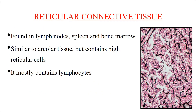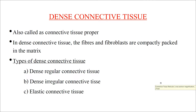Reticular connective tissue is found in the lymph nodes, spleen, and bone marrow, and contains lymphocytes. It is similar to areolar tissue but has a higher proportion of reticular cells.